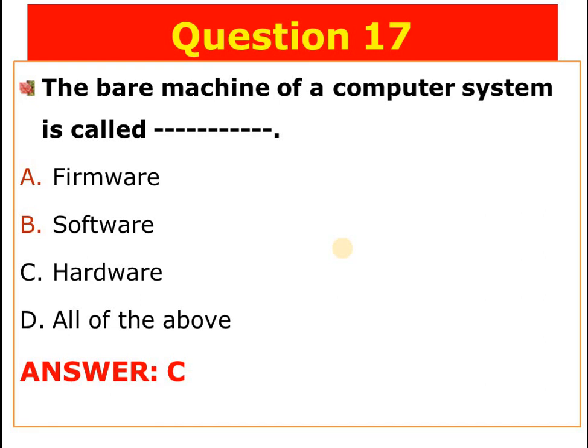Question number seventeen: The bare matching of a computer system is called blank. A) Firmware, B) Software, C) Hardware, D) All of them. The answer is C — hardware is the bare matching of a computer system.